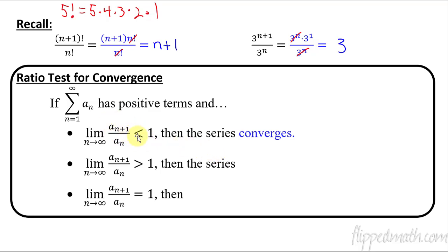So if the ratio is smaller than 1, it converges. If that ratio is larger than 1 as you approach infinity, then the series diverges. And if that ratio actually equals 1, well, then we've got a little bit of a problem.